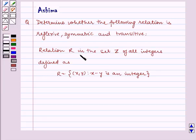Given to us is relation R in the set Z of all integers defined as R equals {(x,y): x minus y is an integer}.